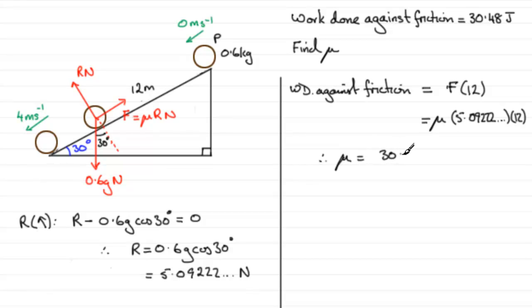So we know the work done against friction, it's the 30.48. So essentially to get μ, μ equals 30.48 divided by 12 multiplied by the 5.0922... Now if you work that out, what you should find you get is 0.4987 and so on.